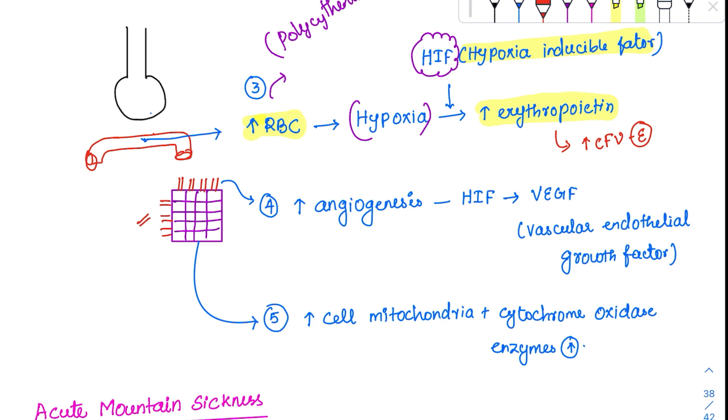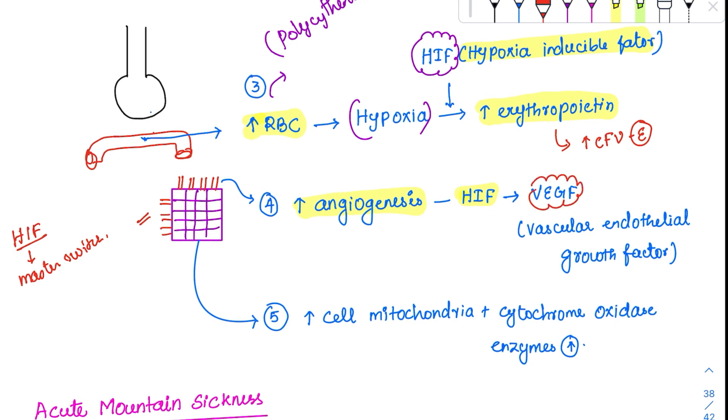At the tissue level, many things happen. There's increased angiogenesis for the same tissue - vessels giving more branches. This is also because of hypoxia inducible factor, which is called the master switch. It produces VEGF, vascular endothelial growth factors. These growth factors help produce more branches and vessels, helping angiogenesis.